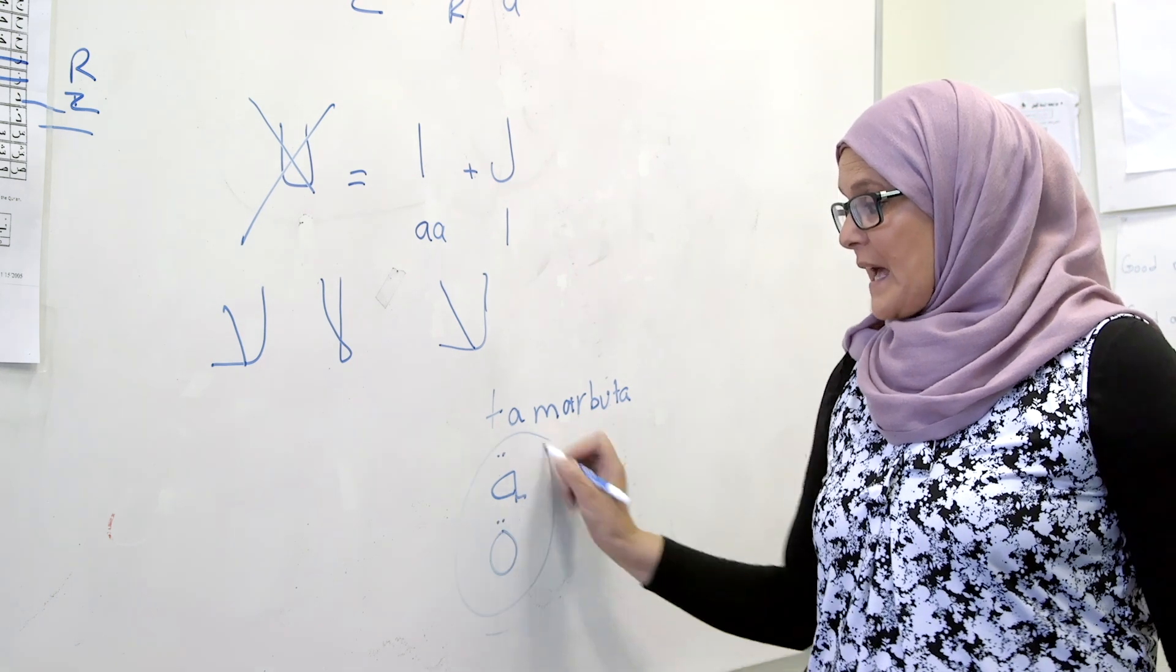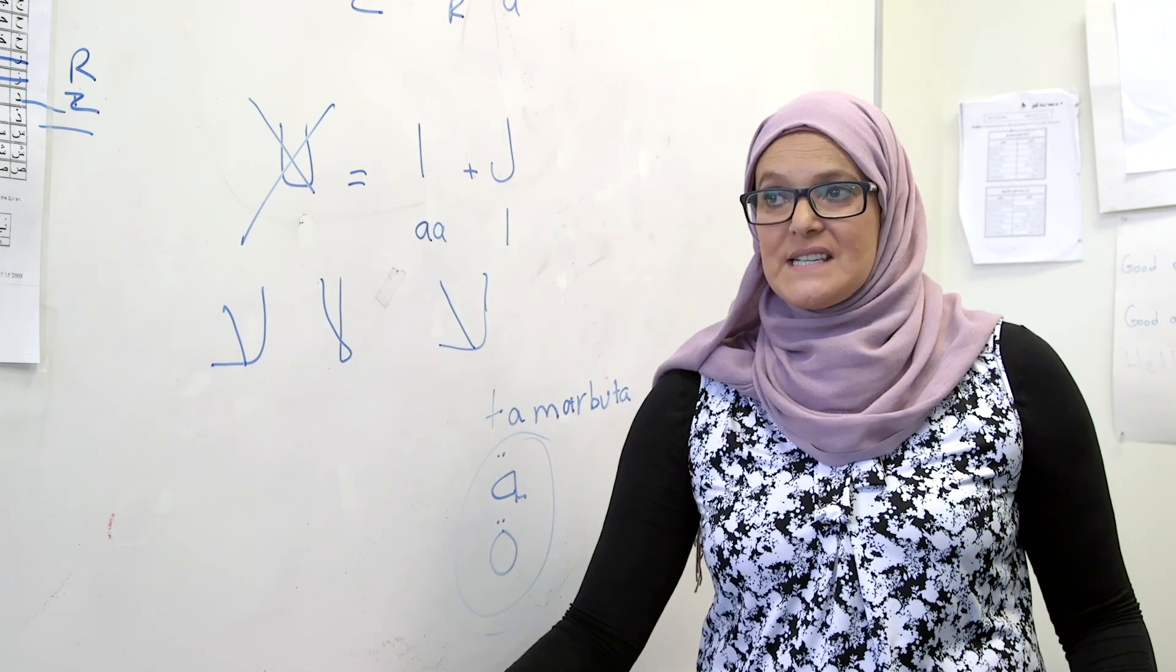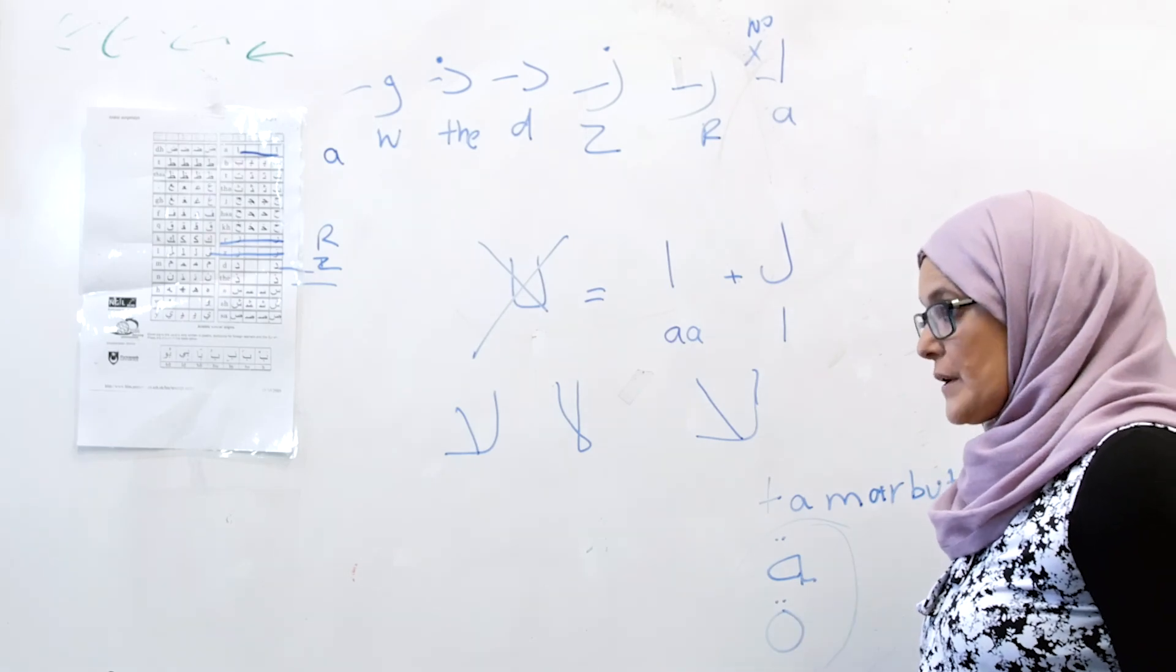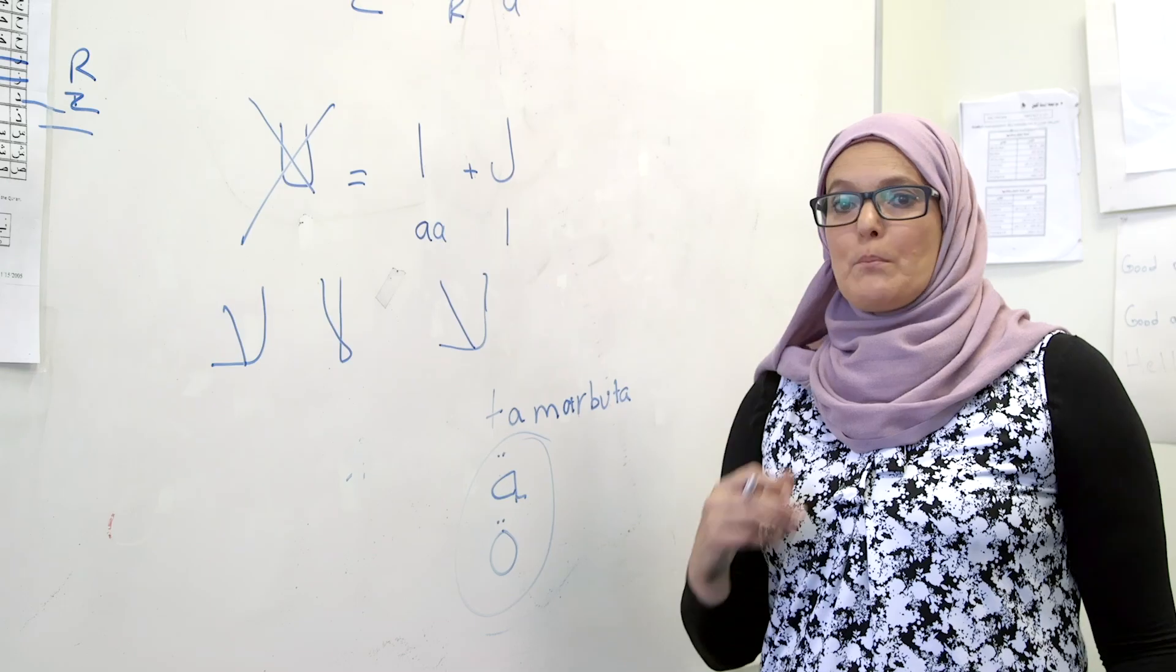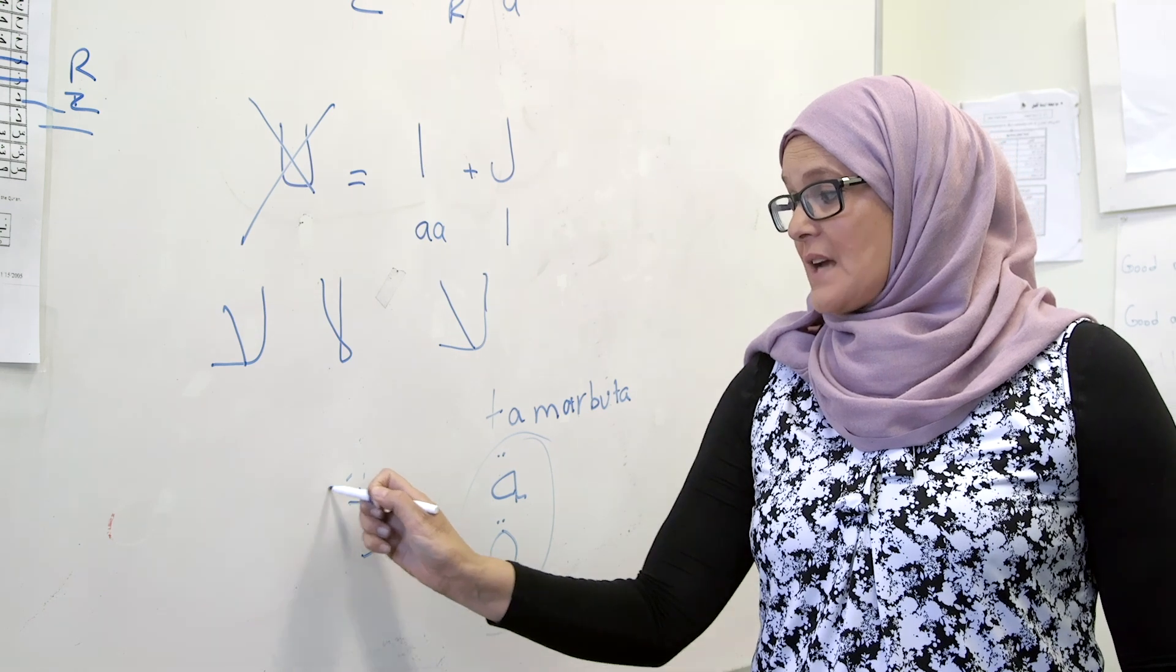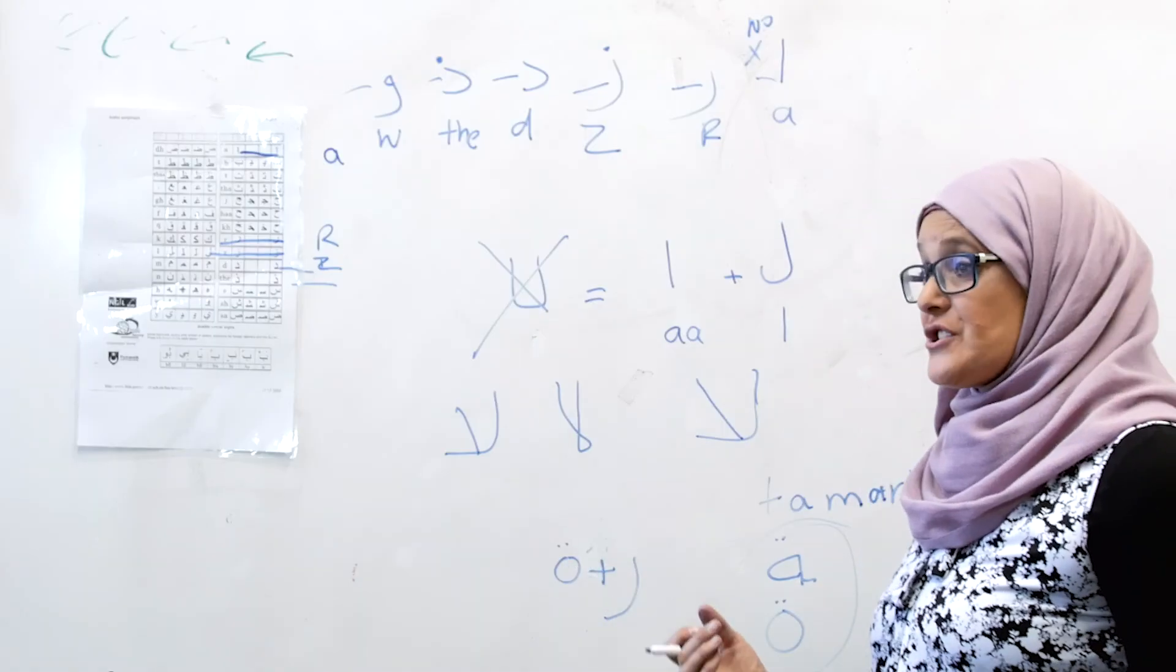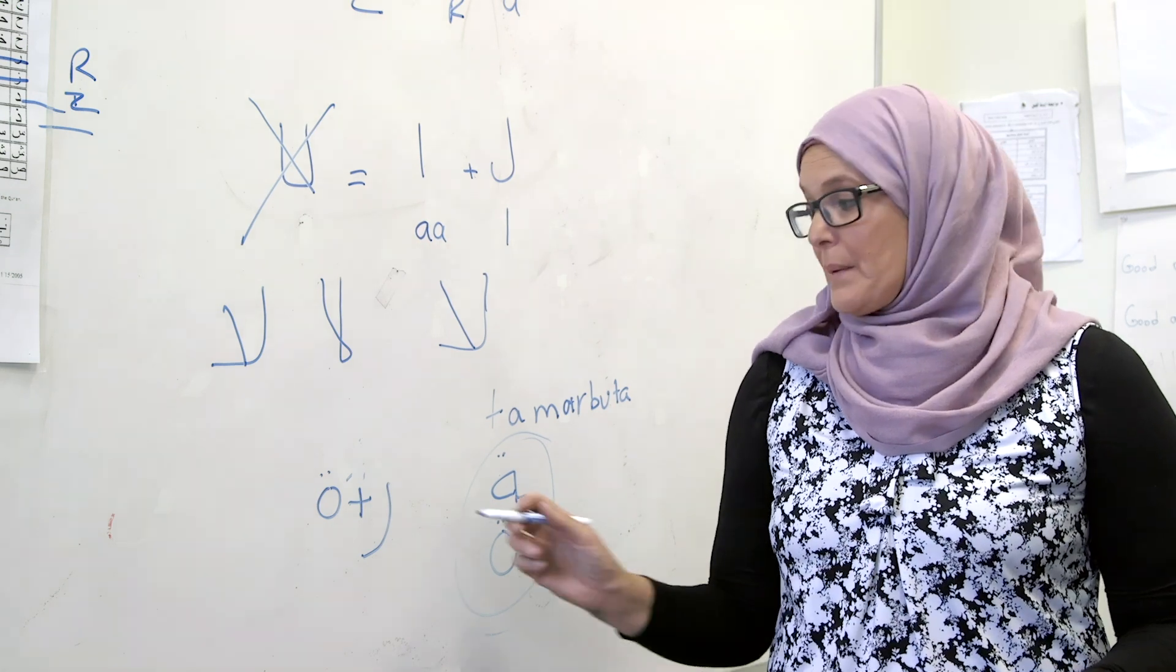And these are ta. What does ta marbuta mean? Ta marbuta is a tight T, like a t plus a. It comes at the end of the word to make it feminine and gives the sound 'a' to my word. Let's say I have an R and then I see a ta marbuta - I'm going to read it like ra. In Arabic, the feminine word ends with ta marbuta.